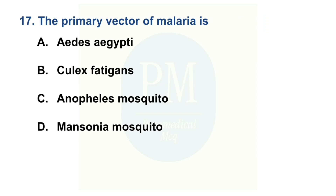The primary vector of malaria is — Option A: Aedes aegypti. Option B: Culex fatigans. Option C: Anopheles mosquito. Option D: Mansonia mosquito. The correct option is Option C: Anopheles mosquito.